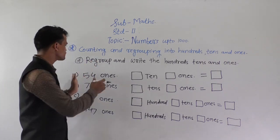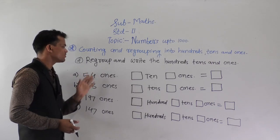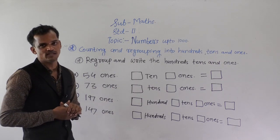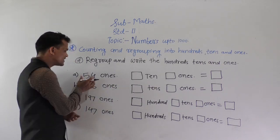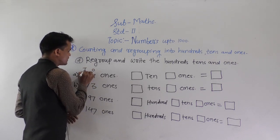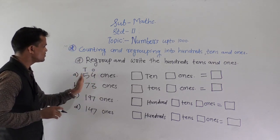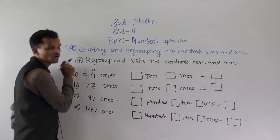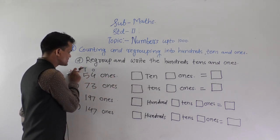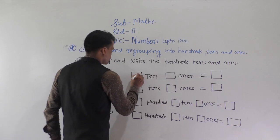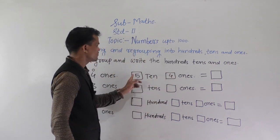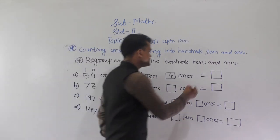Then we have to regroup those 54 ones into how many 10s and how many 1s. See the position of each digit: the 4 is at the ones place and 5 is at the tens place. So 54 ones means 5 tens and 4 ones. Write 5 tens and 4 ones — the number formed is 54.